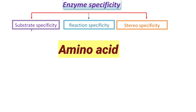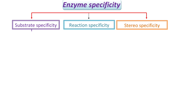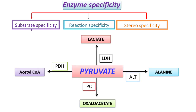For example, if you see pyruvate — it forms different products depending on which enzyme acts on it. If lactate dehydrogenase acts on pyruvate, the product formed is lactate. If pyruvate dehydrogenase acts on pyruvate, the product formed is acetyl-CoA. If pyruvate carboxylase acts on pyruvate, it forms oxaloacetate.